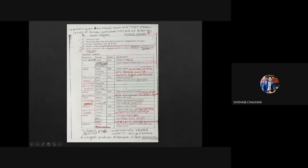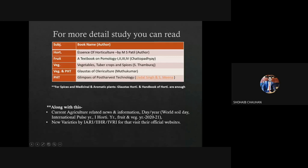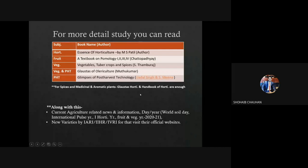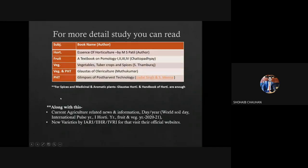If you are willing to prepare notes, you can use Glossary of Horticulture or Instant Horticulture as base, and add additional points from other books. For spices and medicinal aromatic plants, the portion given in Glossary of Horticulture and Handbook of Horticulture is enough — no need to worry about referring to other books.